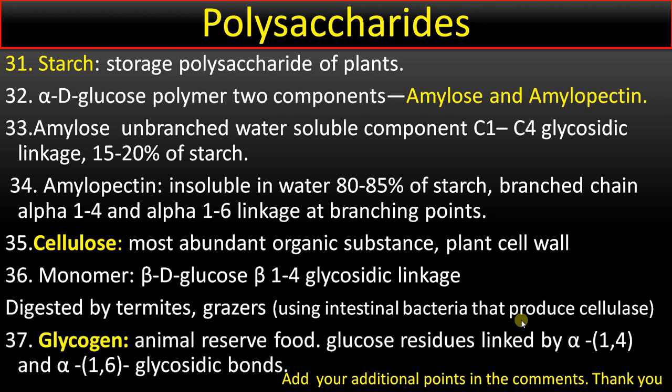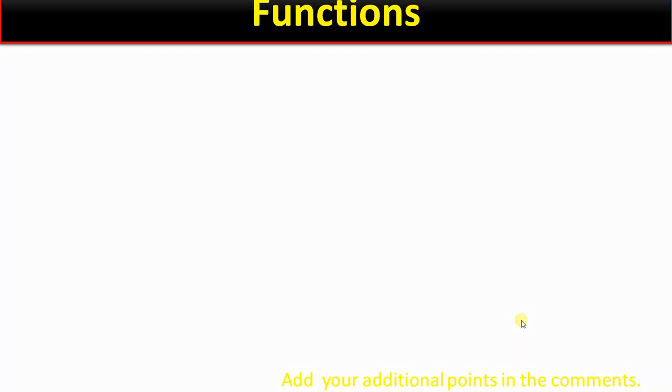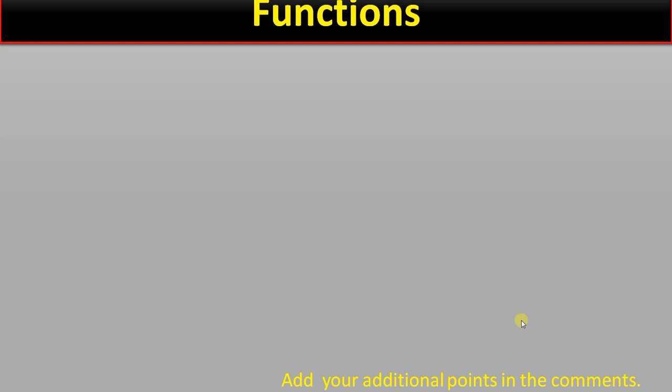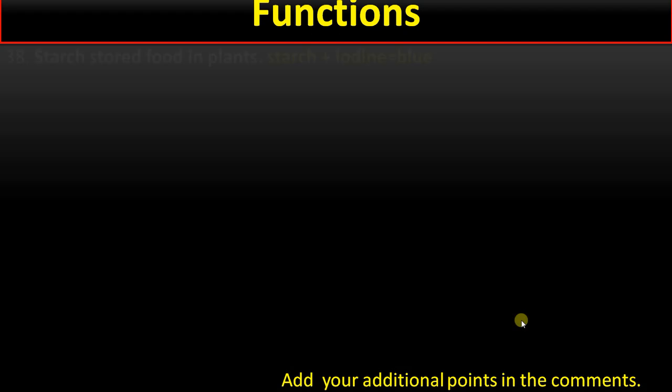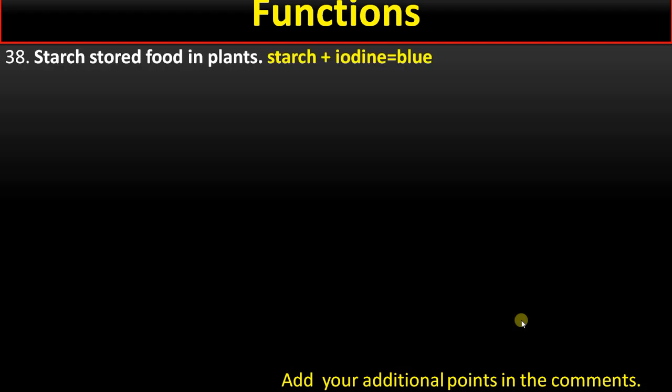Point number 37: glycogen is an animal reserve food made up of glucose residues linked by α-1,4 and α-1,6 glycosidic bonds.